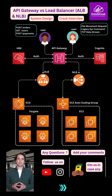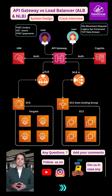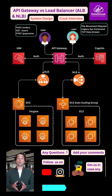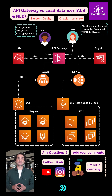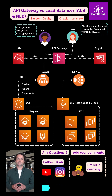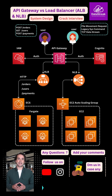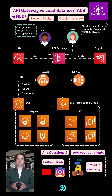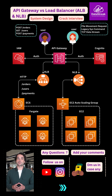Now, let's talk about the two types of load balancers. An application load balancer, or ALB, works at the HTTP level. It understands URLs like slash orders or slash users and routes requests based on paths and headers. That's why ALB is used for modern microservices.